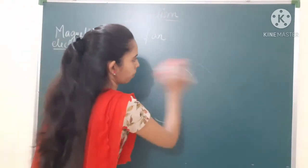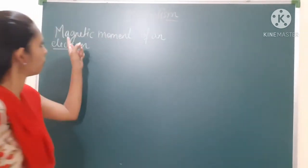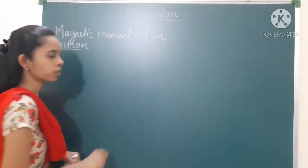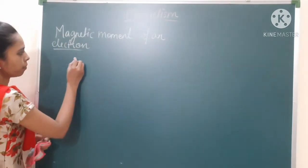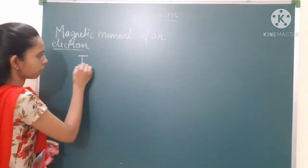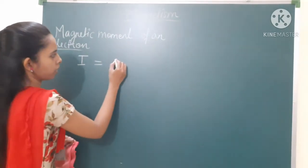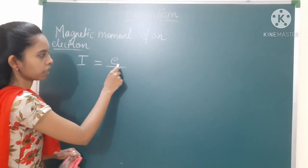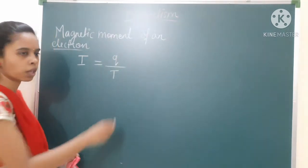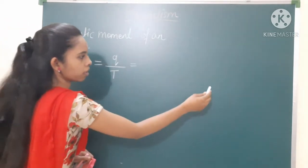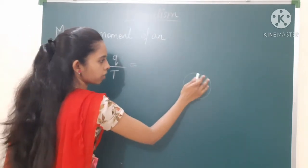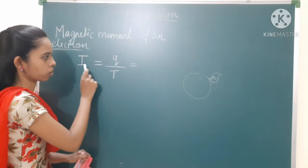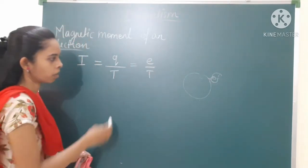In this topic we have to find the magnetic moment of an electron. We have seen that there is a flow of electrons and therefore there is production of current. So the first step is: current I is nothing but the rate of flow of charge, that is I = e/t, where e is the charge of the electron moving in a circular direction.